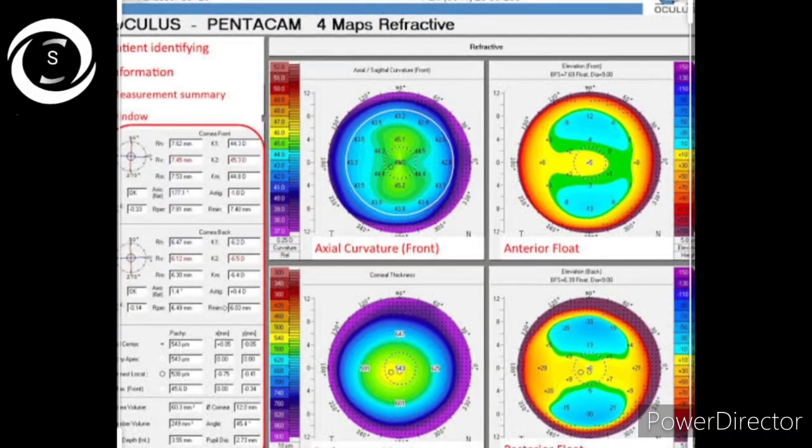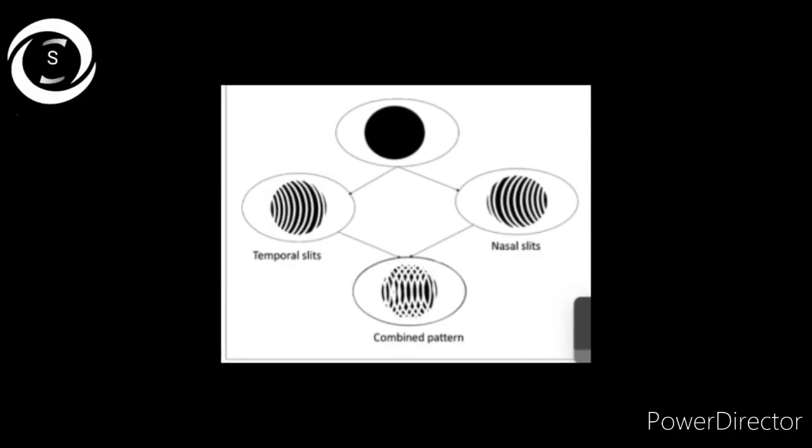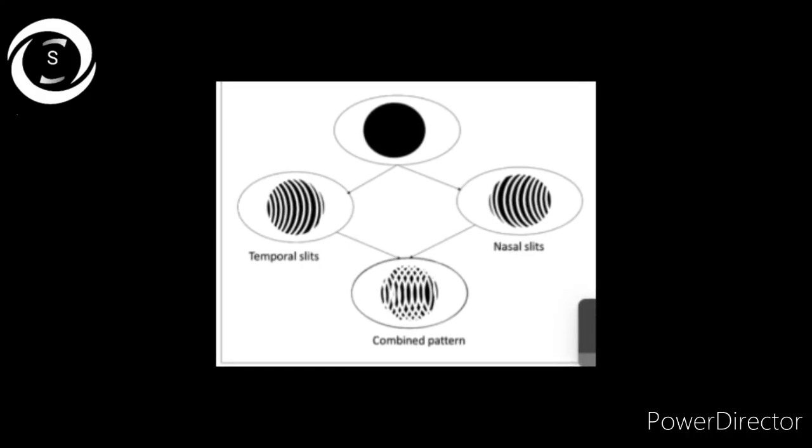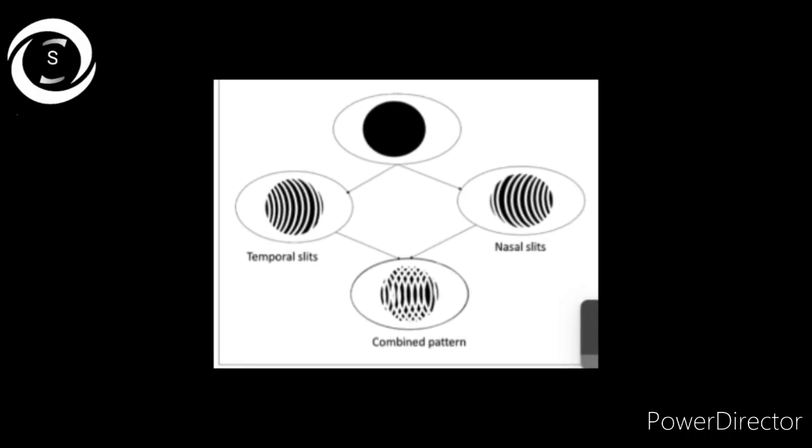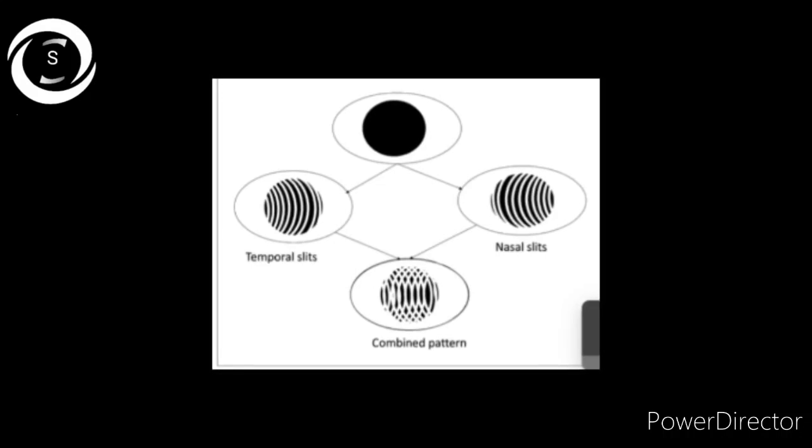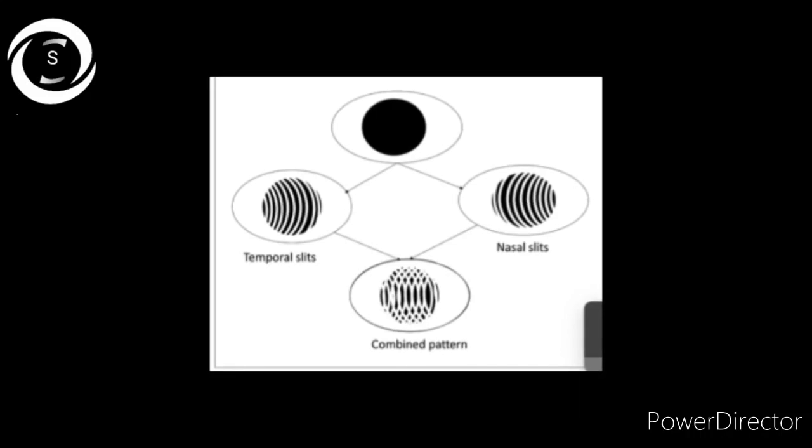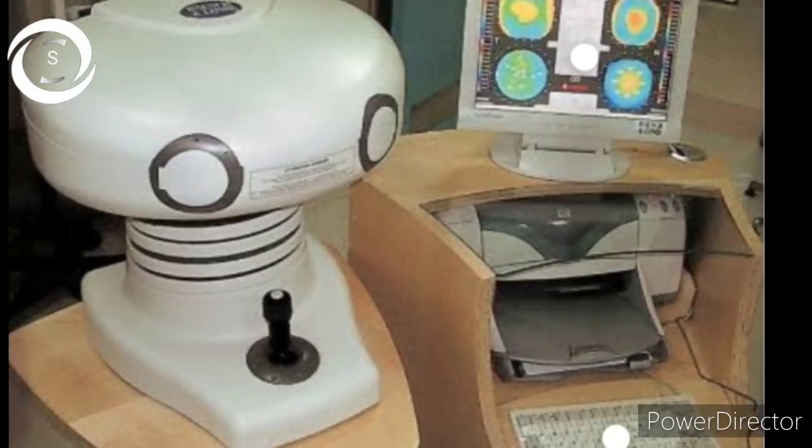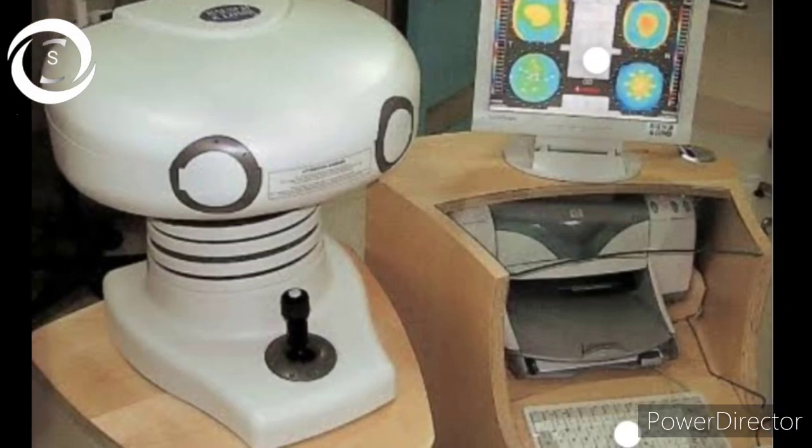Orb scan, another technique of corneal topographic assessment, is the scanning slit technique. Forty slits are projected sequentially on the cornea, 20 nasal and 20 temporal during image acquisition to create an overlapping pattern of scanning slits. This method uses rapidly scanning projected slit beams of light and a camera to capture the reflected beams to create a map of the anterior and posterior corneal surfaces.